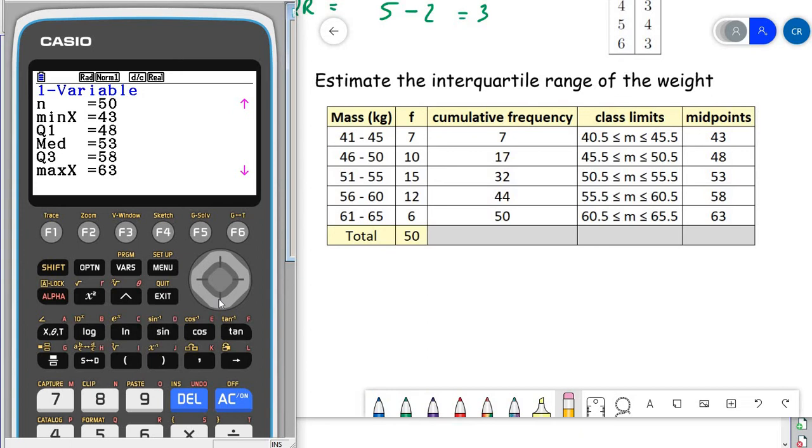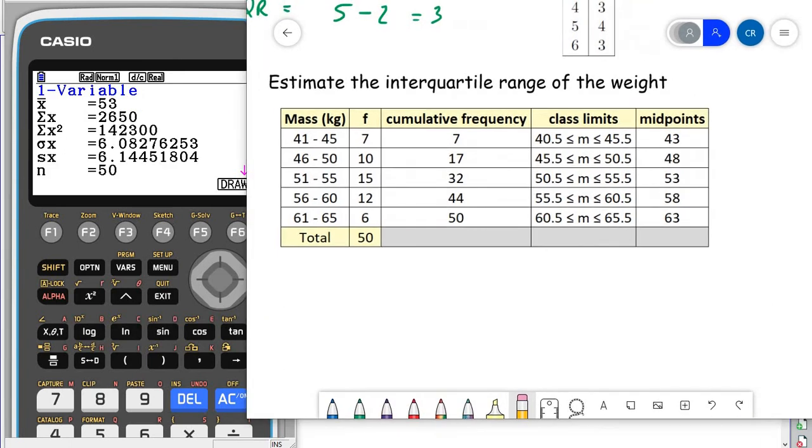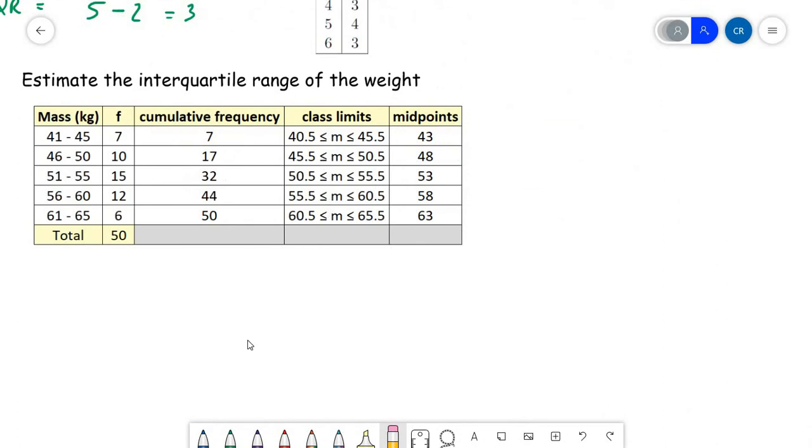Basically, we assume that all the data are uniformly distributed within each group. So our calculator doesn't help us here. Let's instead have a little look at doing it by hand. So the range is a nice, easy thing. So if we want the maximum minus the minimum,